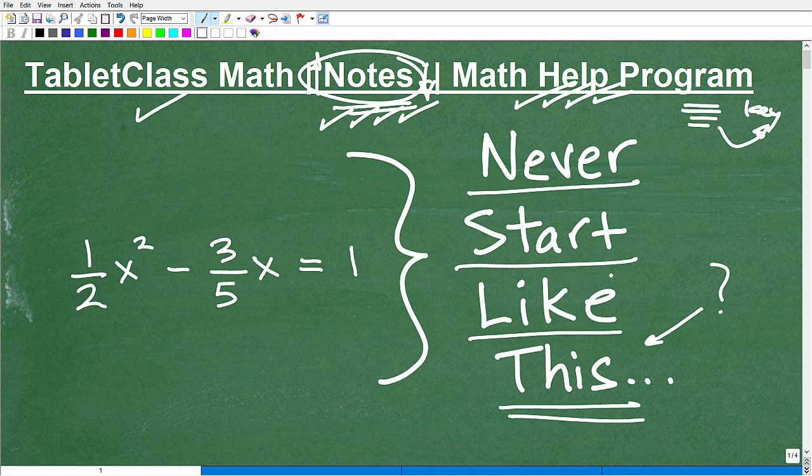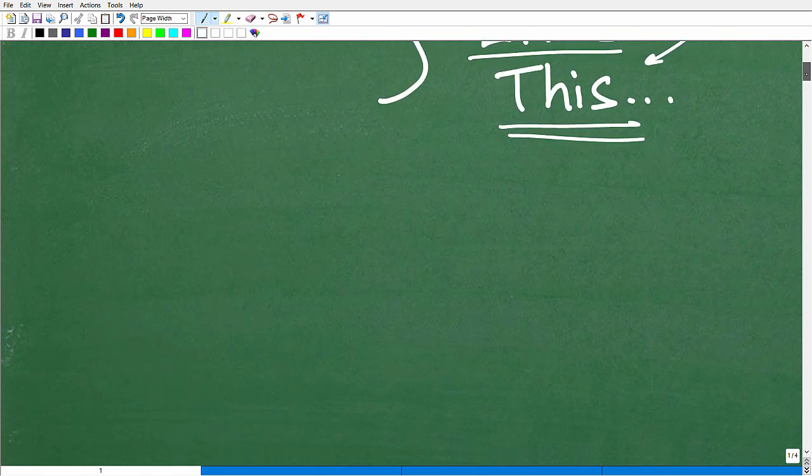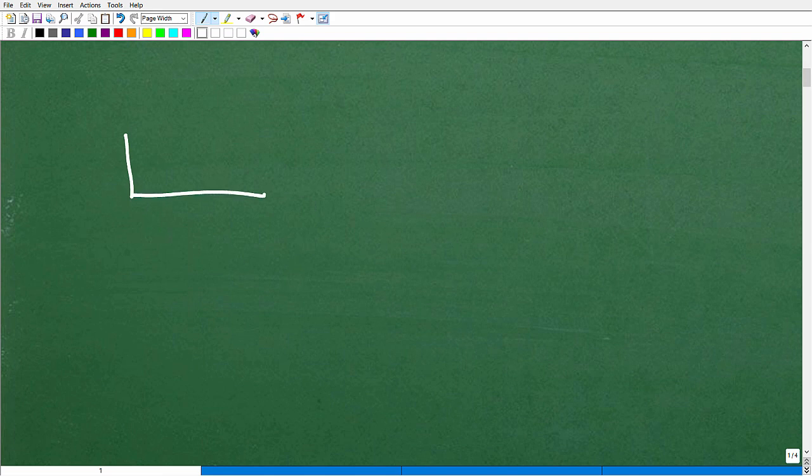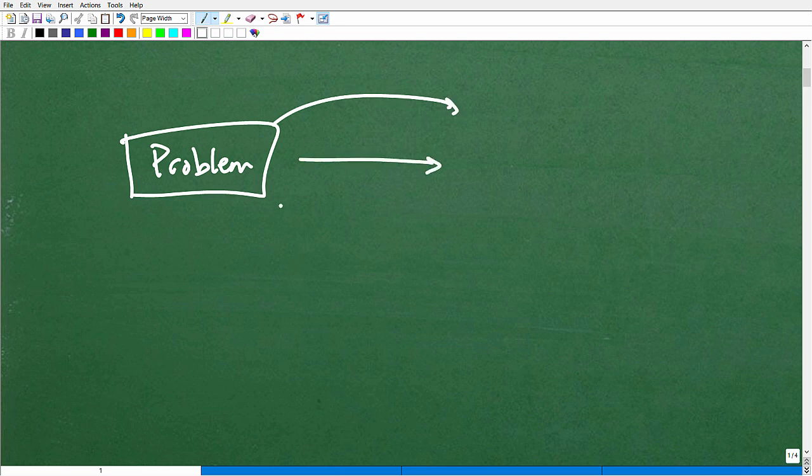So let's get into what I'm talking about here. So never start a problem like this. Well, what does this mean? The whole idea here is, here is a math problem, any math problem. We can take different paths to get to the solution. Usually there's a lot of different ways we can go to get to the solution.